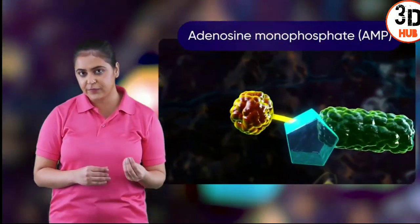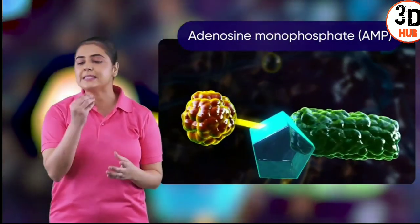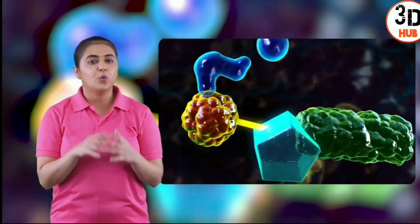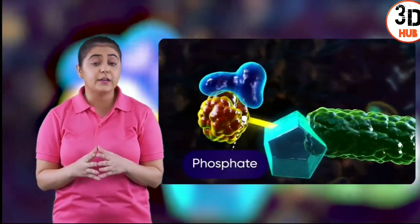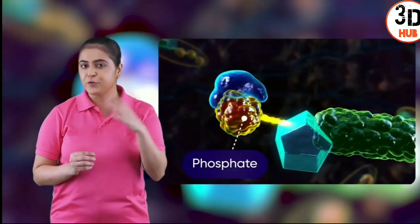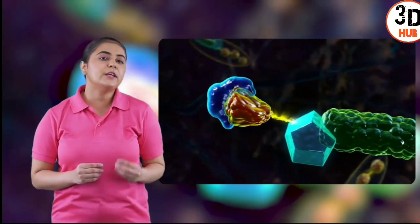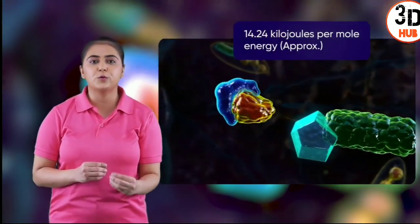When a phosphate group of adenosine monophosphate is removed, it releases only 14.24 kilojoules per mole of energy.